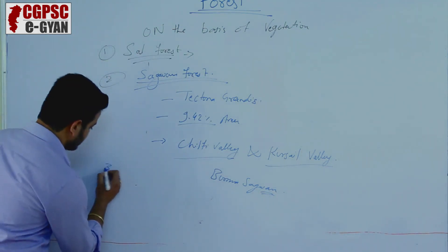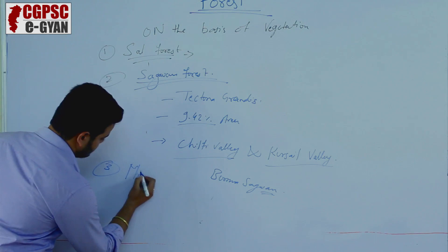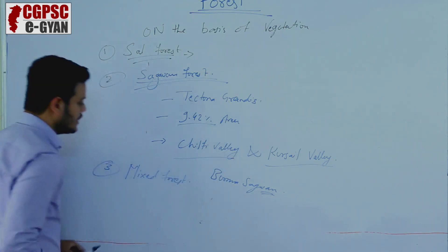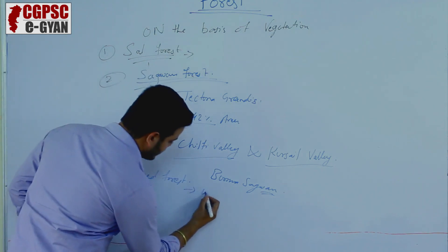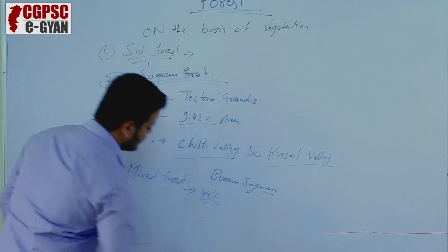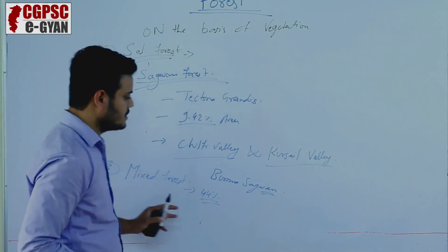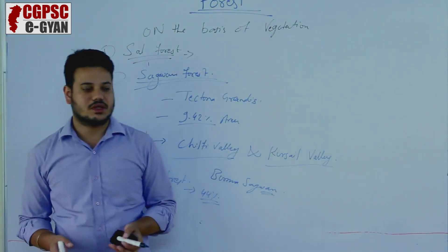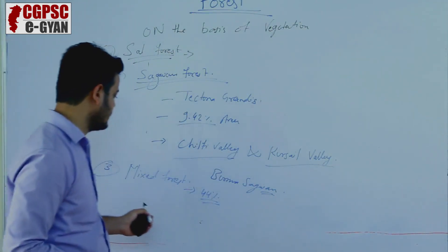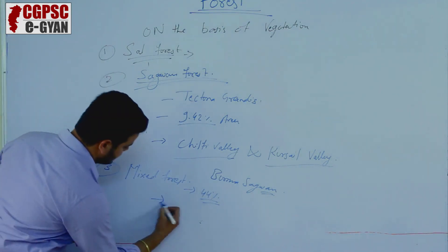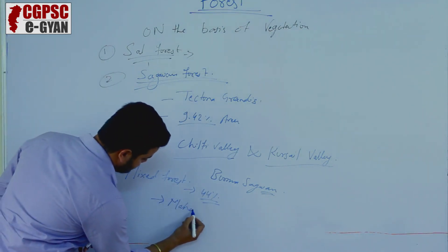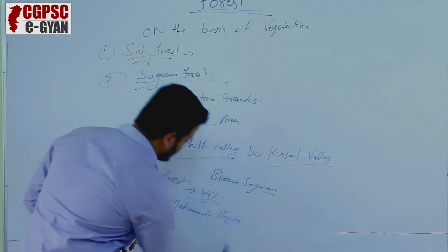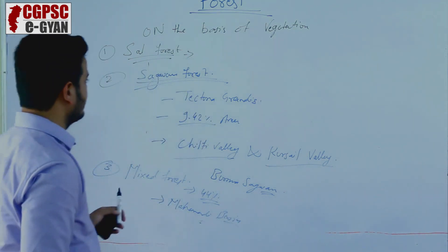The third type is mixed forest. Mixed forest covers 44% of the total forest area. Under mixed forest, species such as tendu, mahua, and gum are found. These mixed forests are found mainly in the Mahanadi Basin.